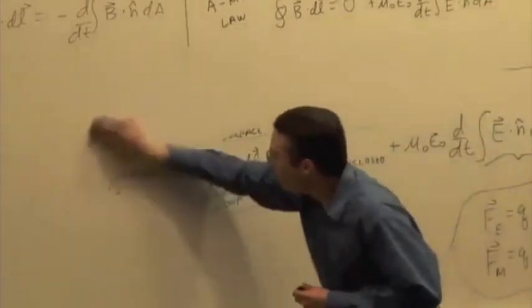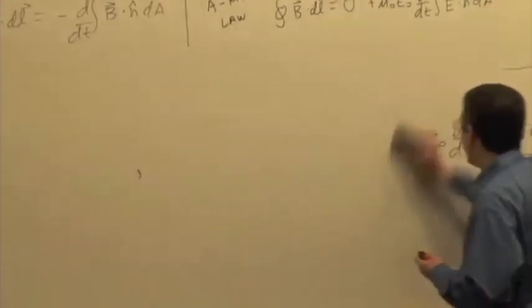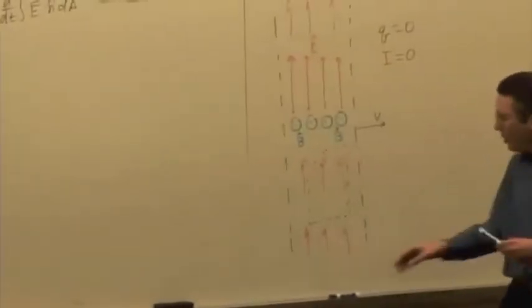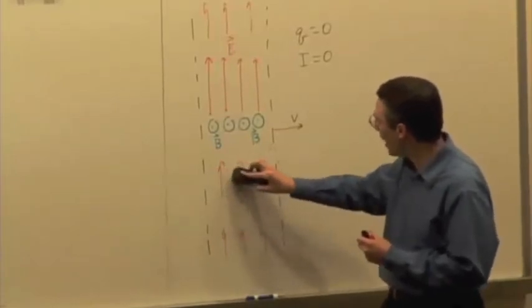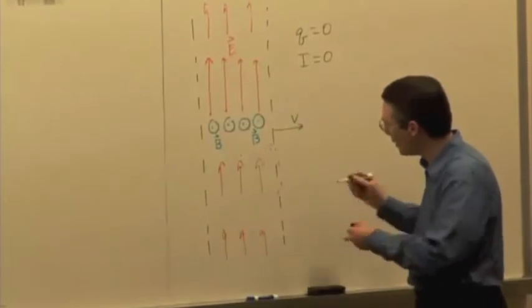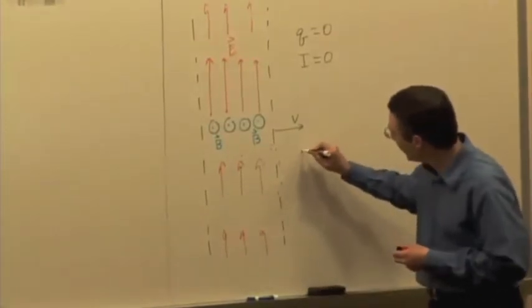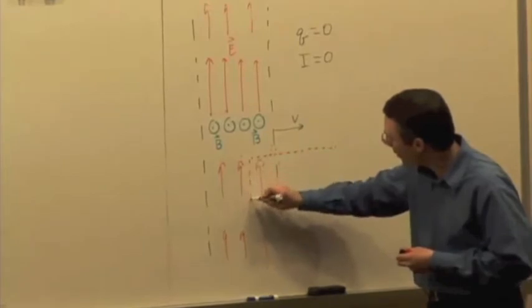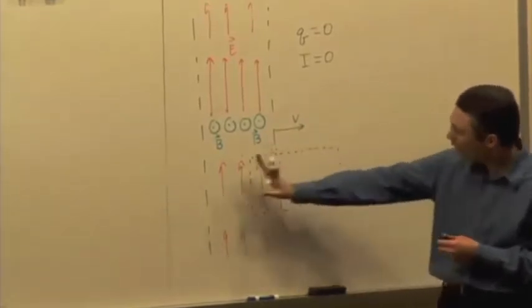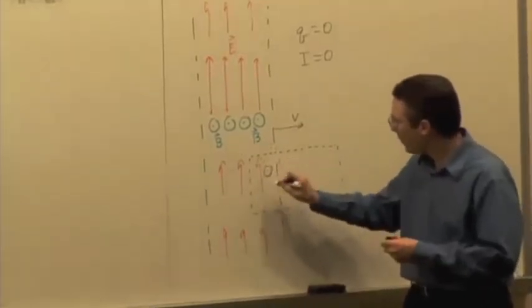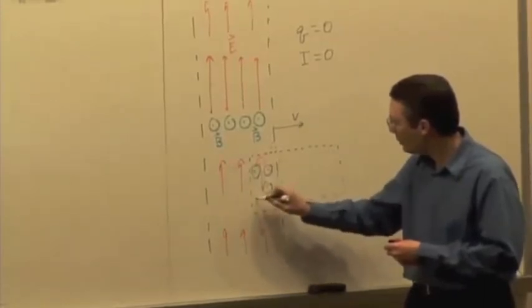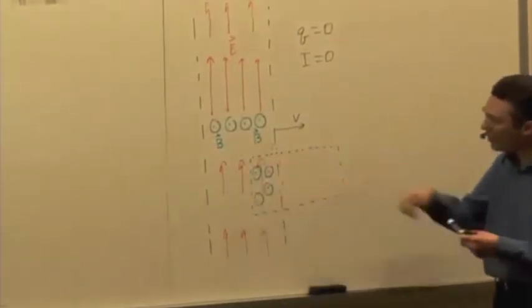So let's look at Faraday's law first. What we're going to do is think about a loop, because we have to think about the electric field around the loop. The loop we're going to pick is a loop that extends partly into this slab of moving electric and magnetic fields and extends partly out of it.